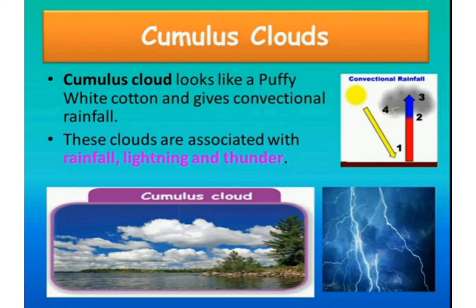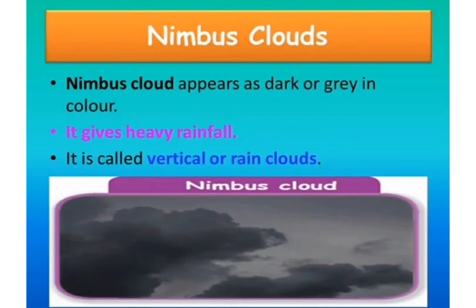These cumulus clouds give convectional rainfall with lightning and thunder. The clouds which appear dark or grey in colour are called nimbus clouds. Nimbus cloud appears dark or grey in colour and gives heavy rainfall. It is called vertical or rain cloud — the another name of nimbus cloud is vertical cloud. They are very tall and may appear in many cloud levels.